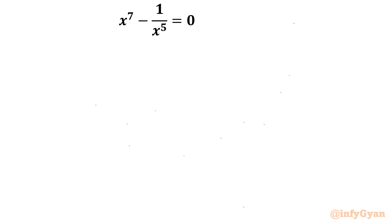Hello my dear friends, welcome to InfiJaan. In this very exciting video of algebraic challenging equations, we are going to solve one very interesting equation: x power 7 minus 1 over x power 5 equal to 0.